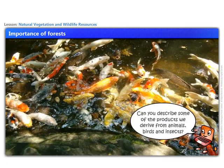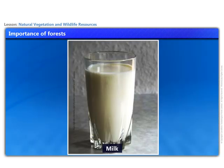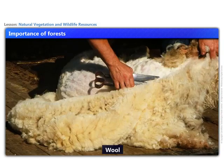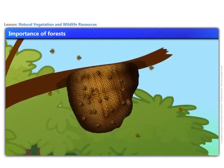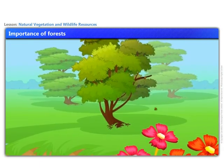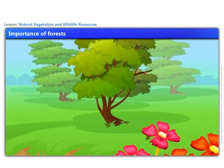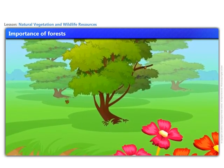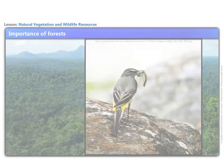Can you describe some of the products we derive from animals, birds, and insects? Animals provide us milk, meat, hide, and wool. Insects like bees provide us honey, help in pollination of flowers, and have an important role to play as decomposers in the ecosystem.